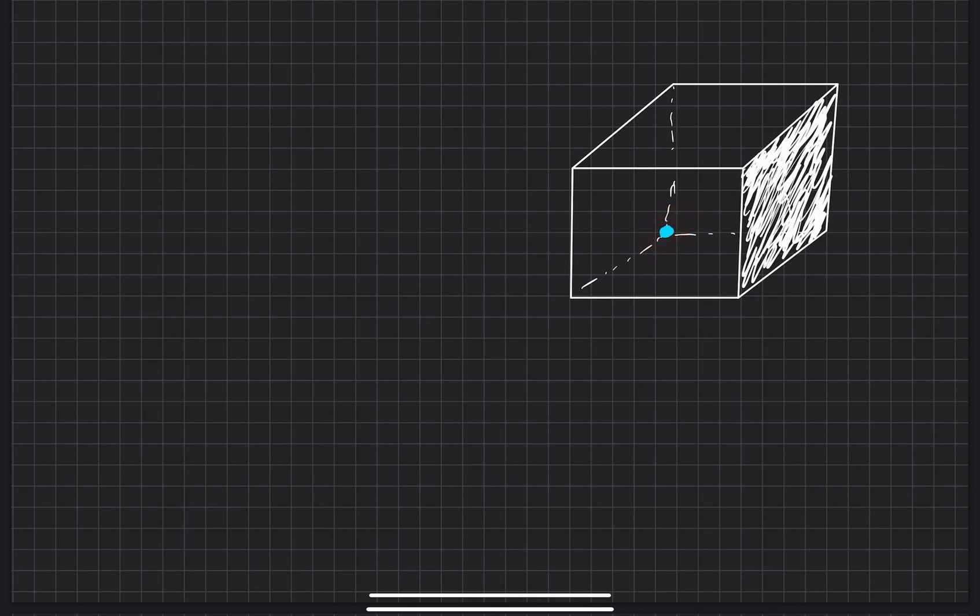So the whole point is we have a charge with some charge cube right here that's located in the back left hand side of this cube and we're trying to find the electric flux that is going through one of the sides, specifically this side of that cube.